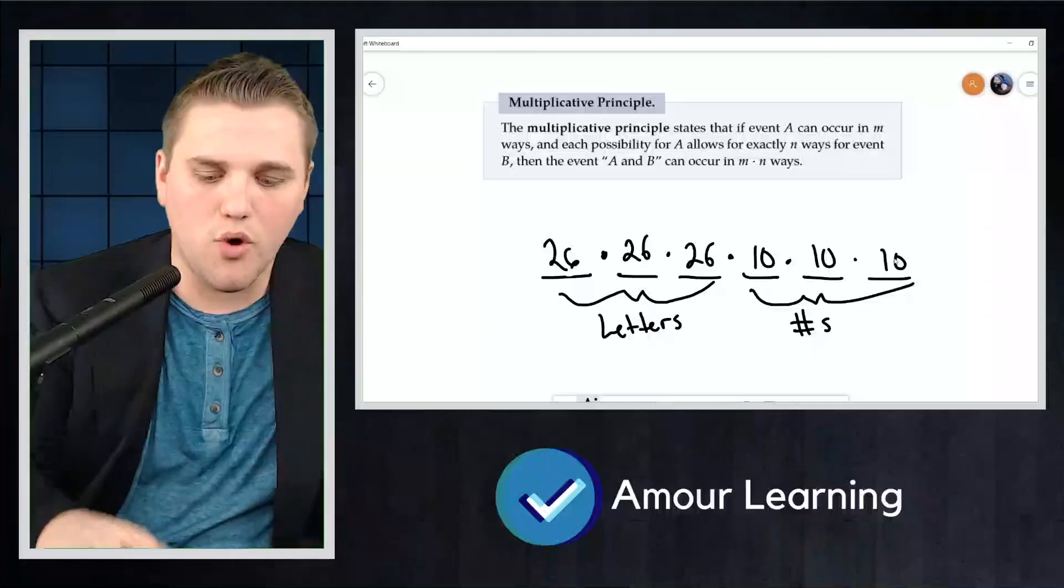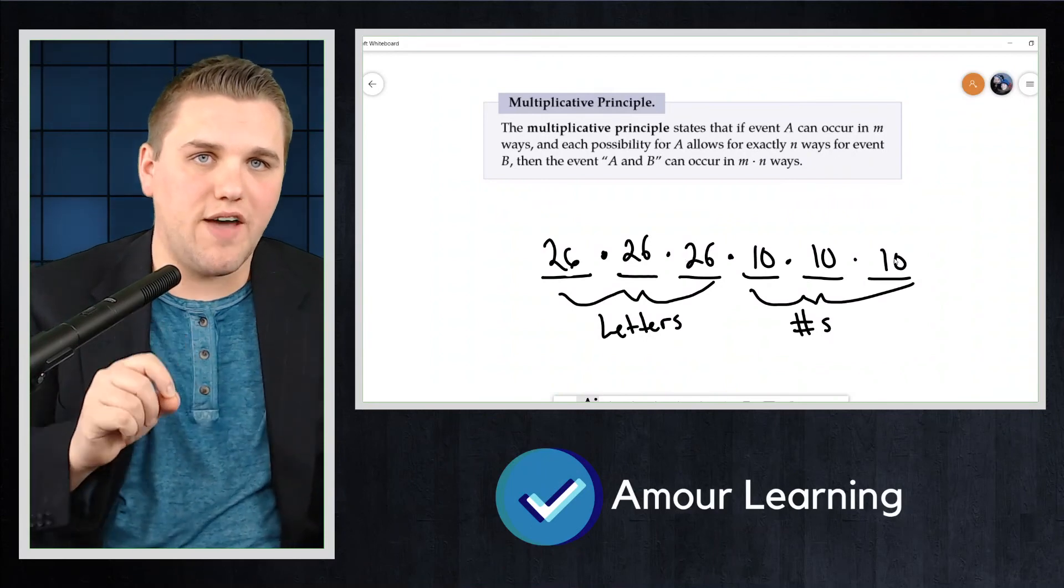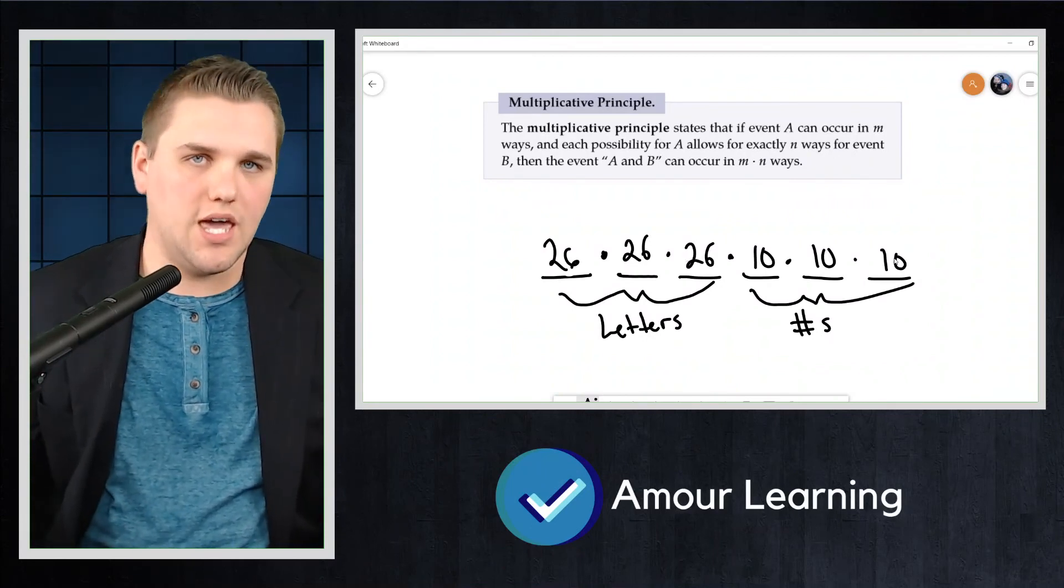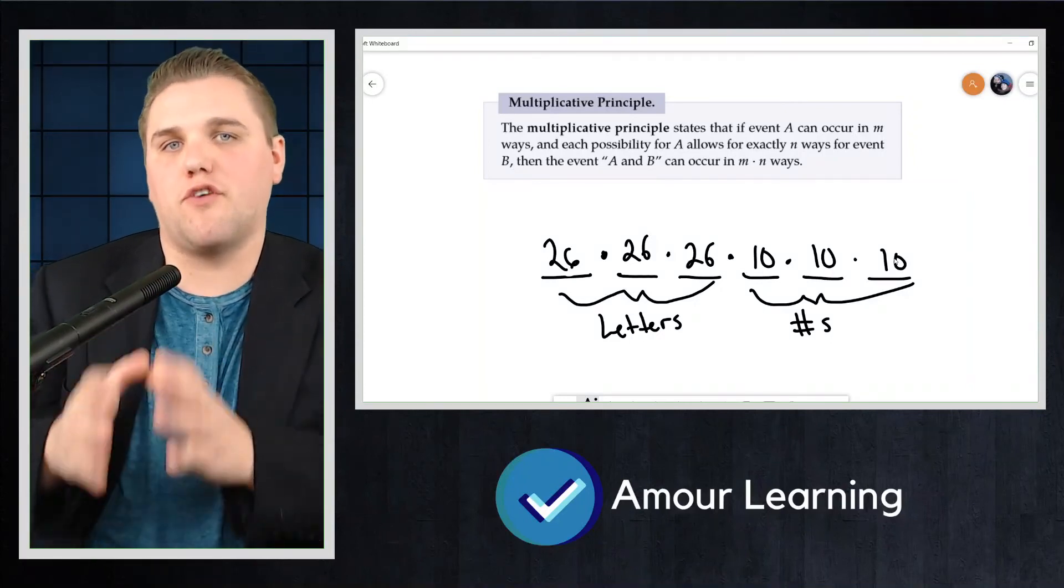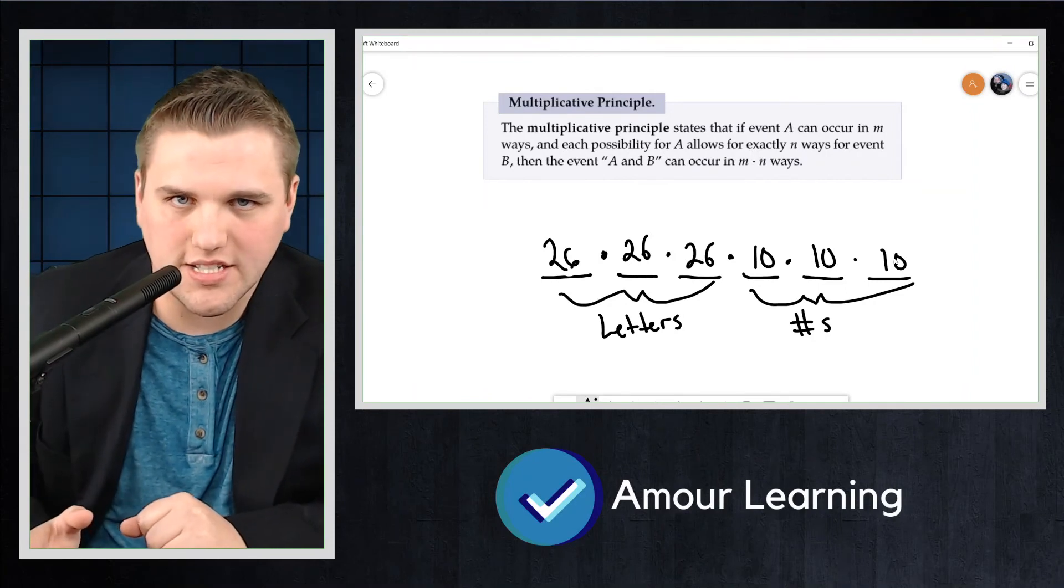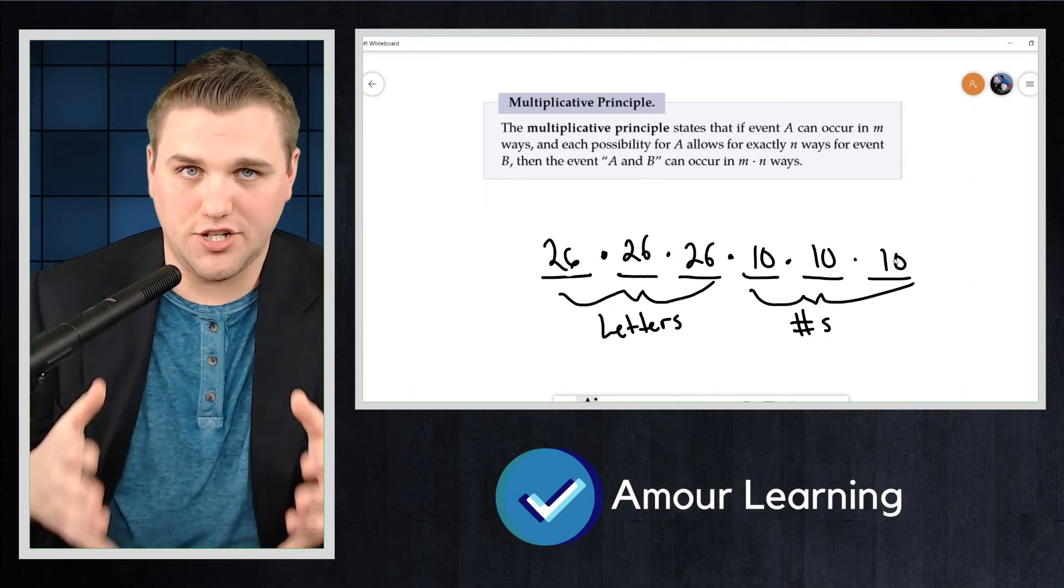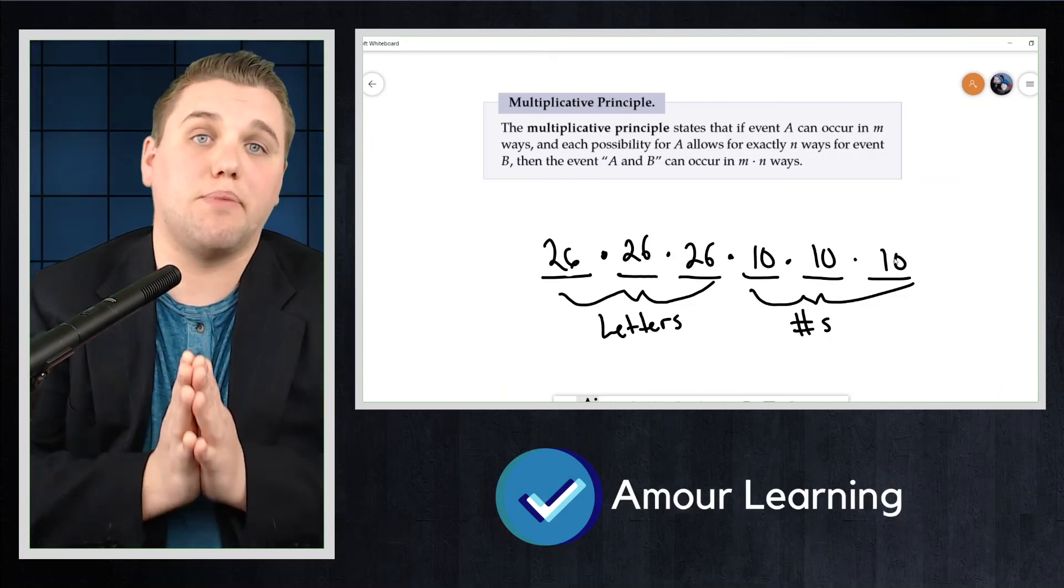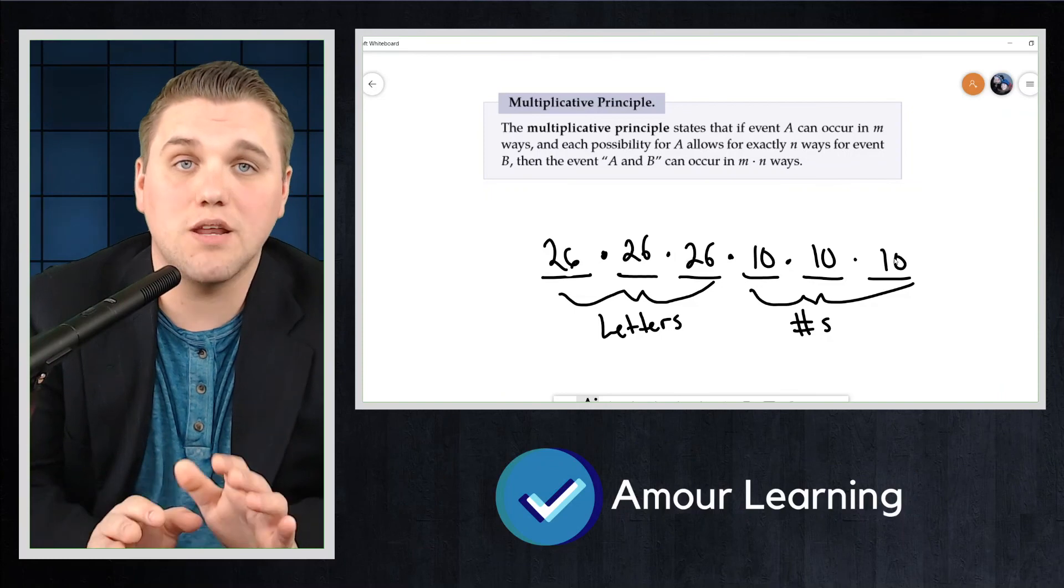We will discuss these more complex problems later, but it's important to understand that in this scenario, all of these six events, all these six choices that you're making, they're all independent of each other. It doesn't matter what you pick for the first letter. The second letter can be any of the 26 letters, which gives rise to many different options here. And the multiplicative principle can apply because these events are all disjoint from each other. They're independent of each other.